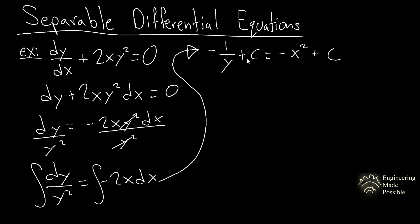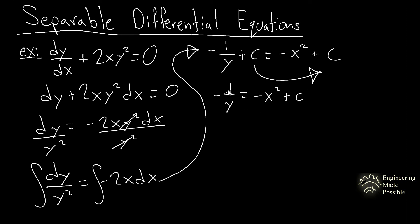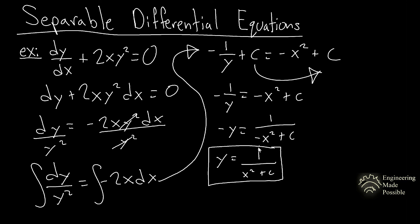After integrating both sides — since these are indefinite integrals, each side has an arbitrary constant, but you can combine them on one side. You're left with negative 1 over y equals negative x² plus an arbitrary constant. Taking the inverse, y equals 1 divided by x² plus an arbitrary constant. This is your solution to this differential equation.